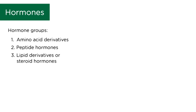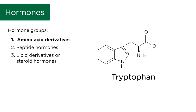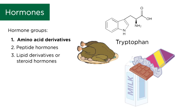For amino acid derivatives, these are small molecules and they come from amino acids like tyrosine and tryptophan. One hormone derived from tryptophan is melatonin, a hormone involved in our sleep-wake cycles. You can get tryptophan from foods like turkey, chocolate, or milk.